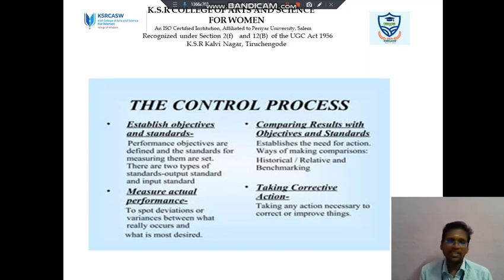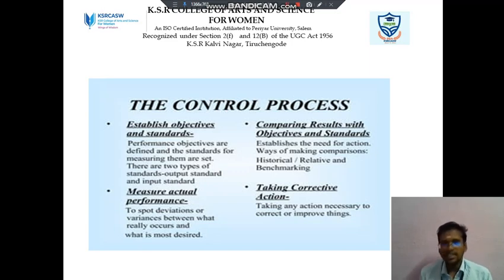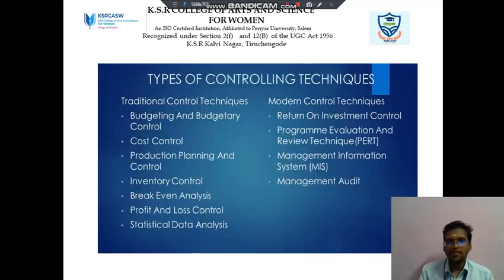The last point in the control process is Taking Corrective Actions — taking action necessary to correct and improve things. These are the four steps in the control process.